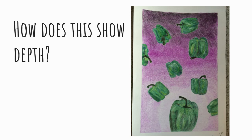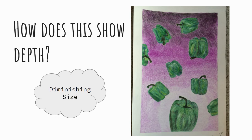Let's take a look at some previous student examples. How does this show depth? What characteristics do we see? If you guessed diminishing size, that would be correct. Notice how the objects — the peppers at the top of the page are smaller versus the object at the bottom is larger. Also, let's talk about the background. The backgrounds for these projects are completely up to you. You can do whatever you want — put them in a setting, shade them with gradient shading like this artist decided to do, do one solid color, polka dots, Zentangles, turn them into fish. It's all up to you, whatever works best.